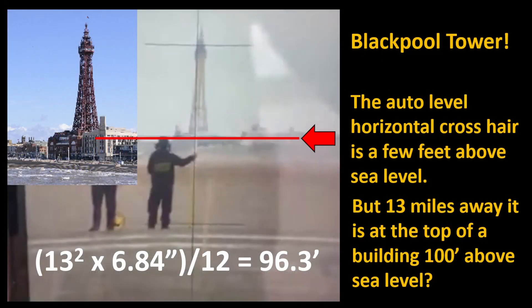You definitely can do it. In fact, you did it. That's you standing on the beach at Southport, about a thousand feet away from an auto level. That's Blackpool Tower, 13 miles away in the distance. Now we're looking through the atmosphere, so 8 inches per mile squared has to be adjusted for atmospheric refraction. Instead of eight inches, it ends up being about 6.84 inches. 13 squared times 6.84 inches divided by 12 to get feet is 96.3 feet. Look at where the crosshair lines are on Blackpool Tower — that's about a hundred feet above sea level. Your auto level is just a few feet above sea level. This is exactly the effect that formula describes.